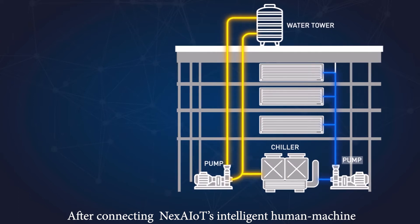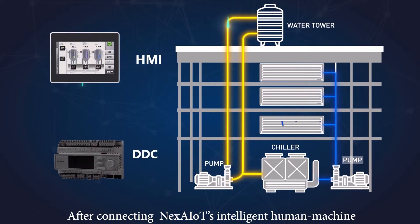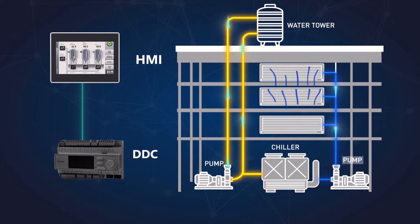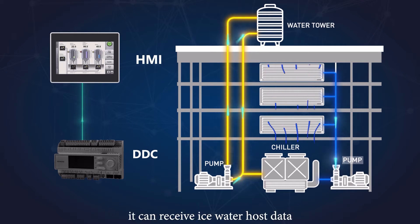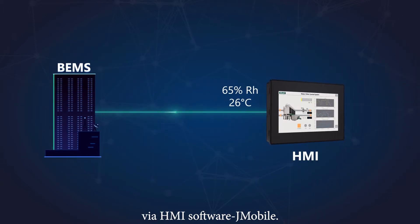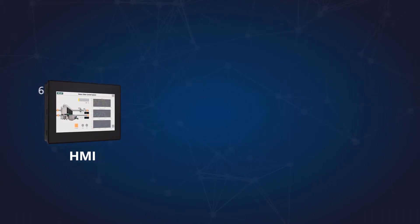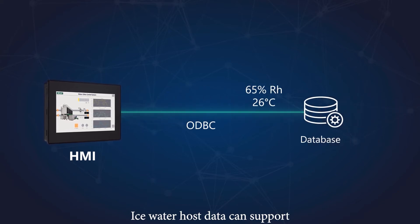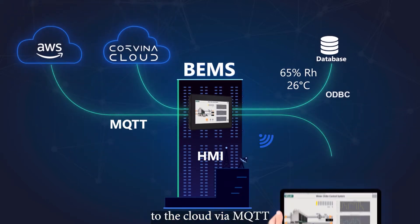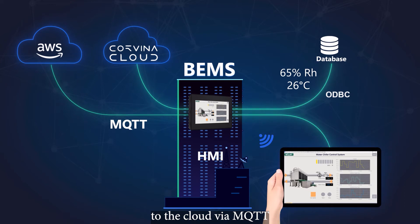After connecting NEX AIoT's intelligent human machine interface with the building's host controller for ice water, it can receive ice water host data and automatically adjust the VFD via HMI software J-Mobile. Ice water host data can support ODBC transfers to the database via J-Mobile, and it can also send important data to the cloud via MQTT.